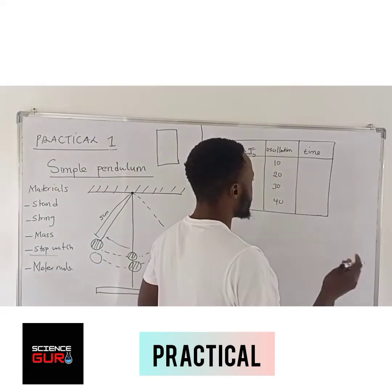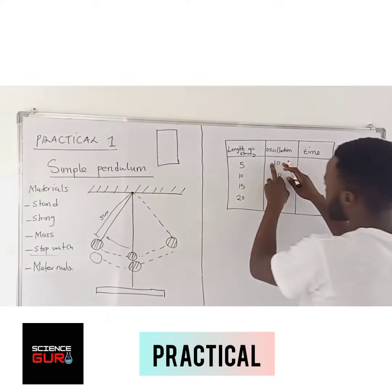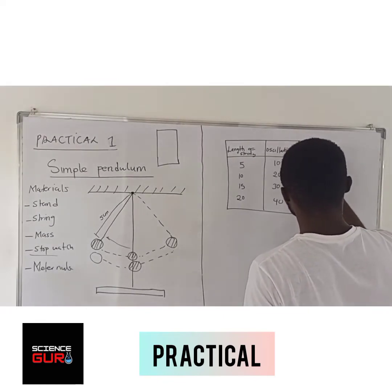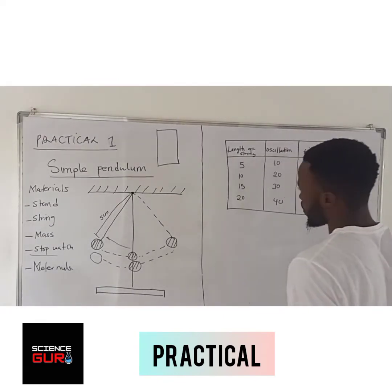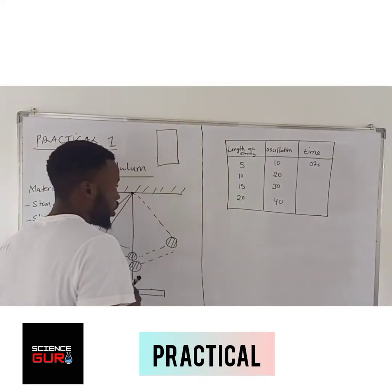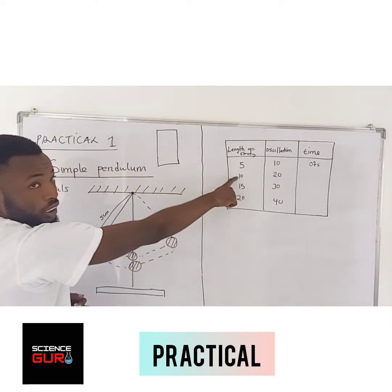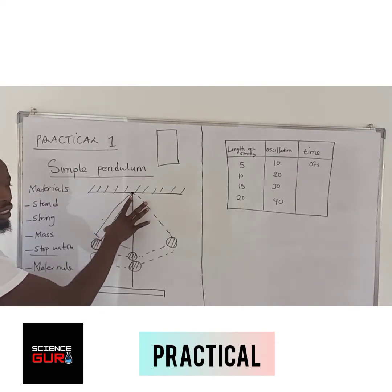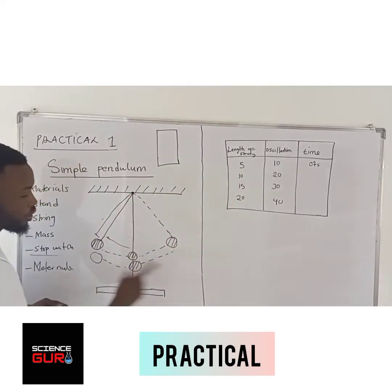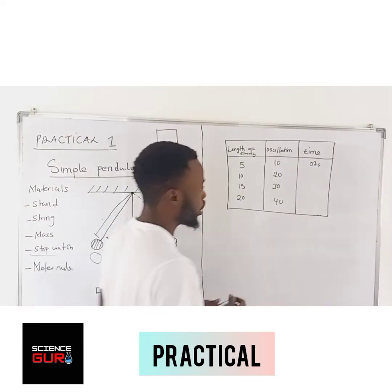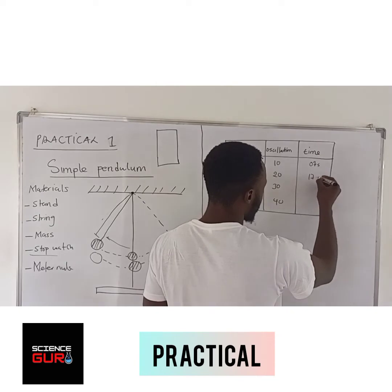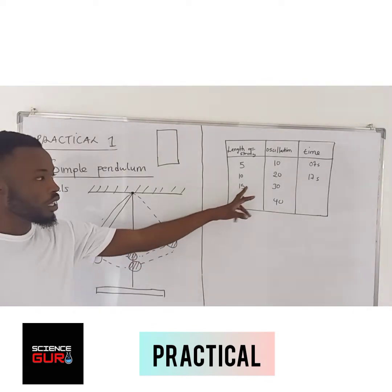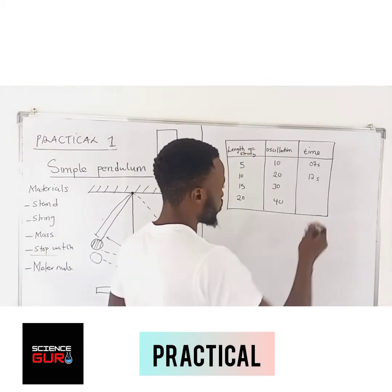Let's say the time you have recorded for it to make 10 oscillations is 0.7 seconds. Remember, you are getting seconds. Then you count again to 20 oscillations — adjust your string, make sure that you measure it, it becomes 10 centimeters. Adjust it to 10 centimeters, then you let it go. Let's say the time it took is 17 seconds. Then adjust it to 15 and make 30 oscillations — let's say it took 27 seconds. Adjust it to 20 and make 40 oscillations, and let's say it took 34 seconds.